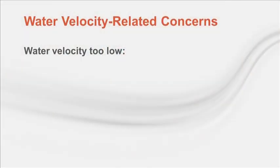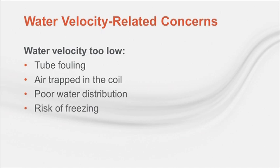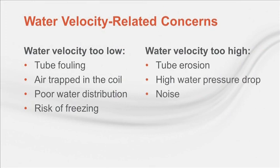Consequences of too low water velocity include tube fouling from sediment, scaling, or microbial growth; air trapped inside the tubes causing loss of capacity, noise, or vibration; poor distribution of water resulting in non-uniform coil face temperatures; and a higher risk of water freezing inside the tubes. On the other hand, too high water velocity can cause erosion of the inside surfaces of the tubes, especially at the U-bends, excessive water pressure drop, and noise. There are also diminishing returns on coil capacity with higher velocities.